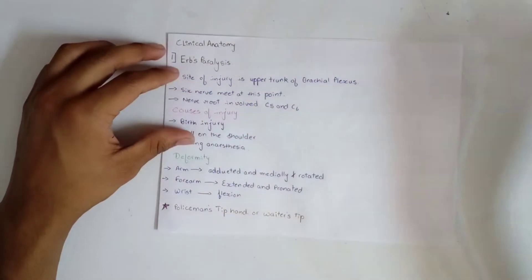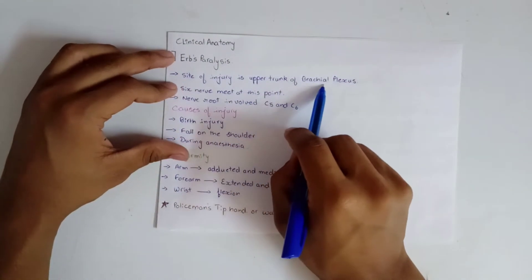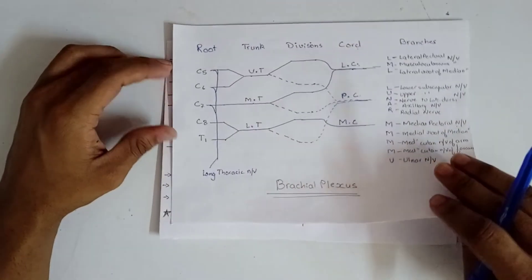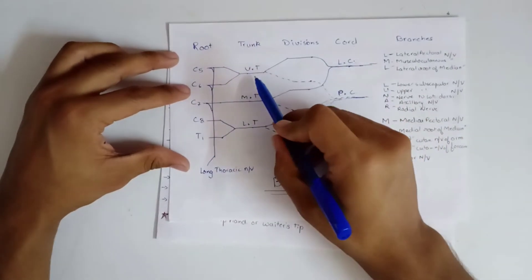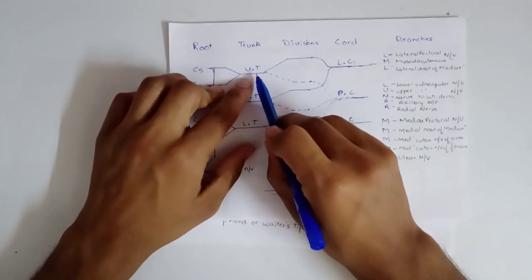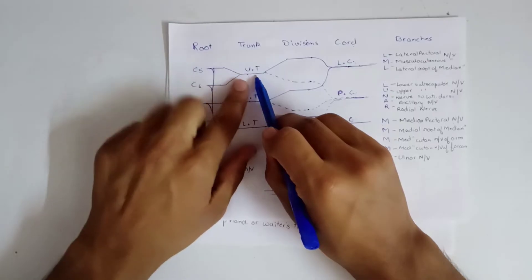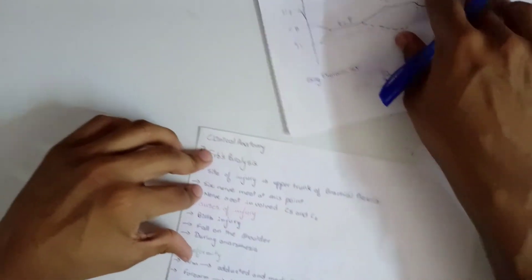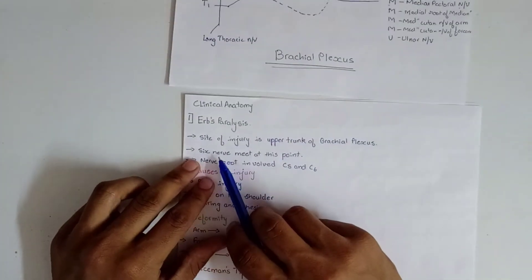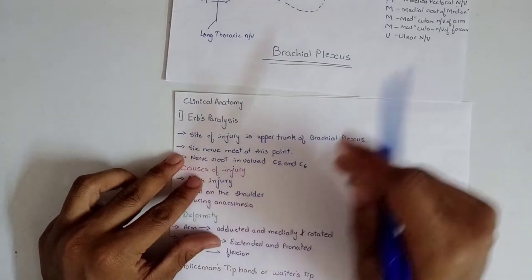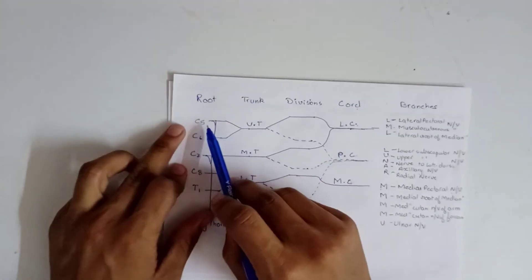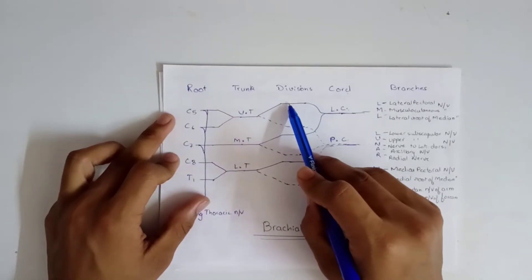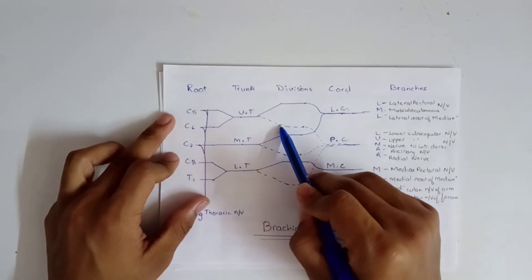In Erb's paralysis, the site of injury is the upper trunk of the brachial plexus. In the previous video we identified this upper trunk. So in Erb's paralysis there is injury to the upper trunk. C5 and C6 nerve roots meet at this point — the ventral division and dorsal division of the upper trunk.